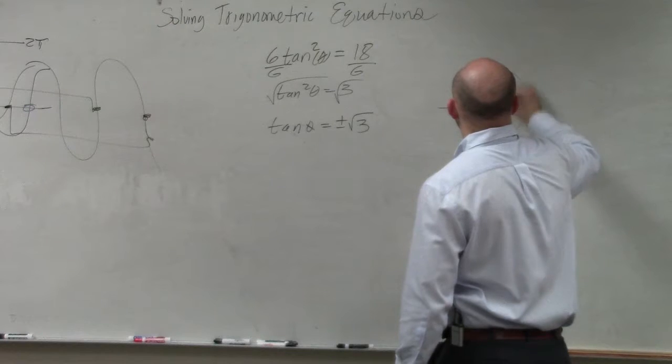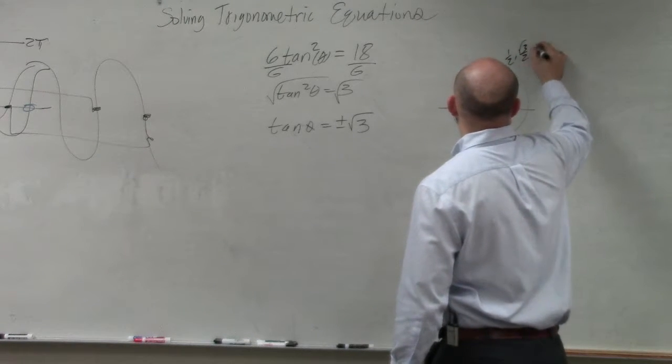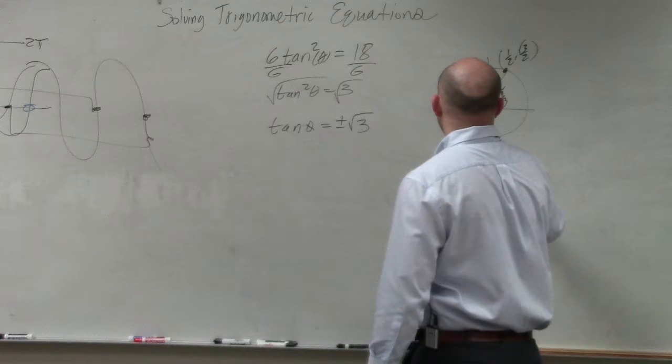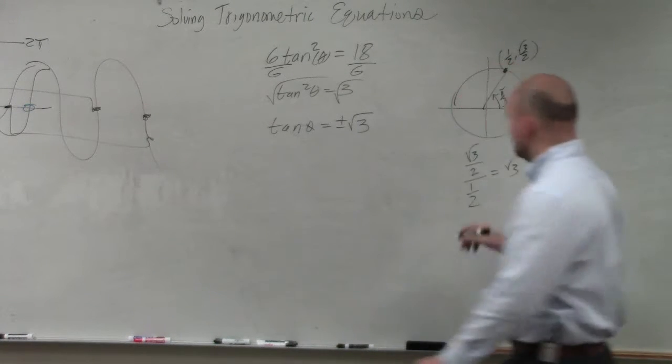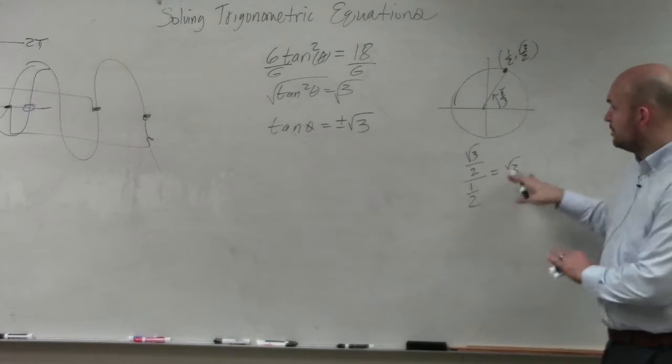Here's pi over 3. Basically, that is 1 half, comma, square root of 3 over 2. Does the y-coordinate over the x-coordinate equal the square root of 3? Yes. So my angle is pi over 3.